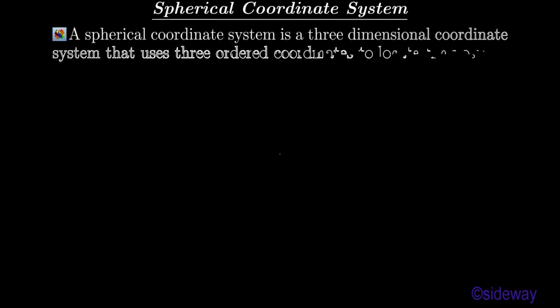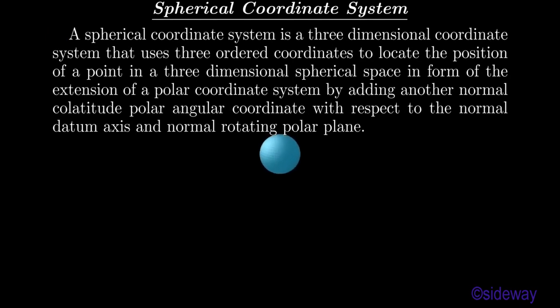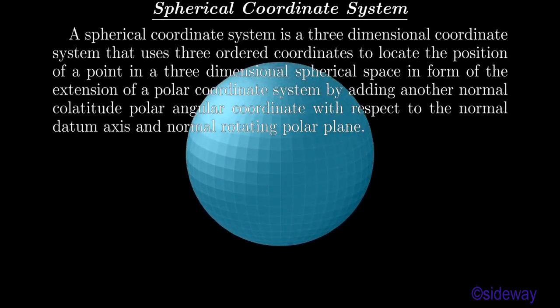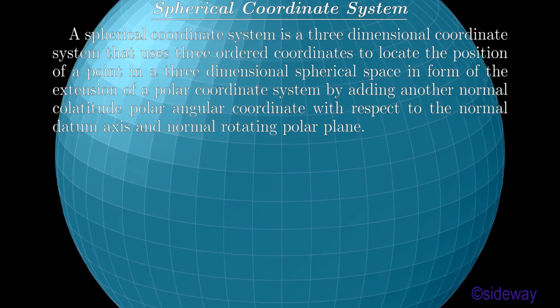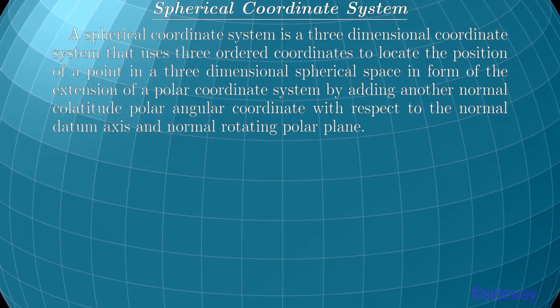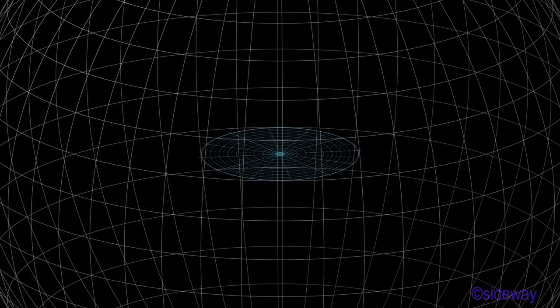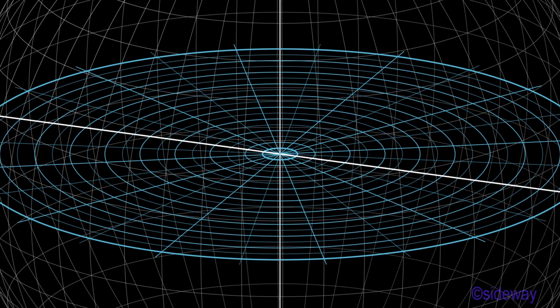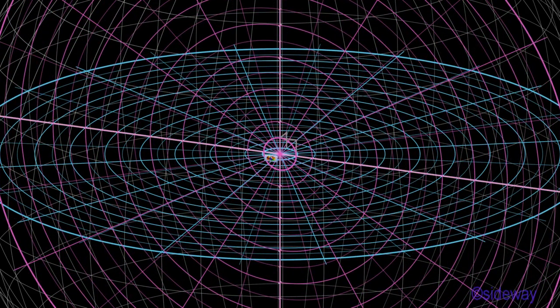Spherical Coordinate System. A spherical coordinate system is a three-dimensional coordinate system that uses three ordered coordinates to locate the position of a point in a three-dimensional spherical space, in the form of the extension of a polar coordinate system by adding another normal colatitude polar angular coordinate, with respect to the normal datum axis and normal rotating polar plane. One arbitrary polar plane with a polar axis in space is chosen as the datum polar coordinate plane, and a number line normal to the polar plane and intersecting at the polar pole, the normal datum axis, is combined with the polar plane to form the space. Unlike cylindrical space, one more rotating polar plane, normal to the polar plane and intersecting at the polar axis, the normal datum polar coordinate plane, is added to form the spherical space. The polar point is the origin or position zero of the spherical coordinate system, where something begins or emanates from.